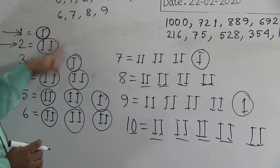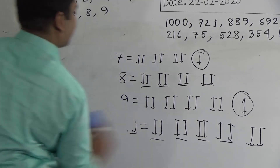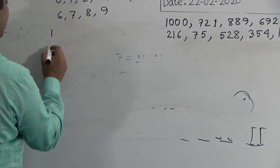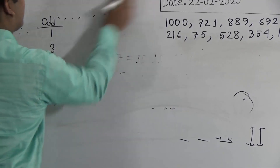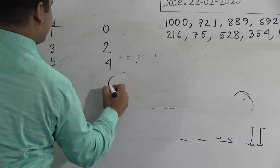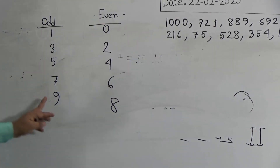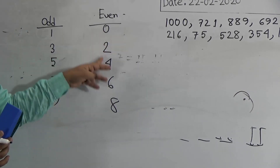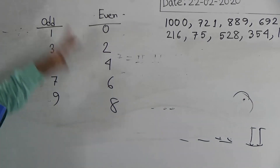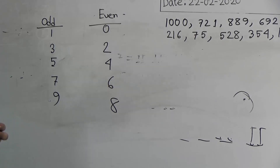Ten has no single stick, so ten is even. Zero is also a sign of even number. So from this we can take a decision: from 0 to 9, the numbers 1, 3, 5, 7, and 9 are odd numbers. On the other hand, 0, 2, 4, 6, and 8 are even numbers. So if you learn this, it is easier to separate odd and even numbers from a given set.